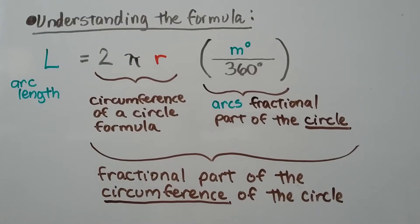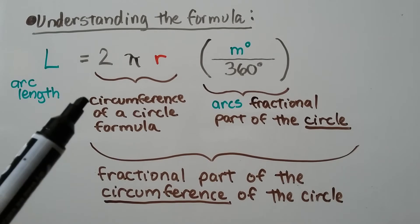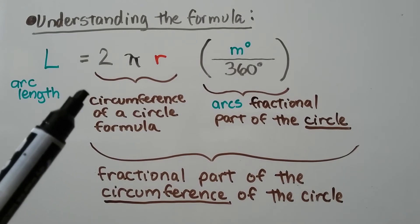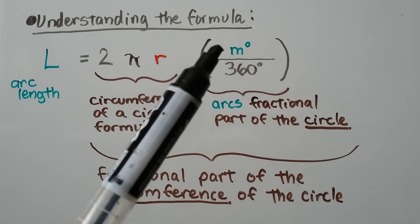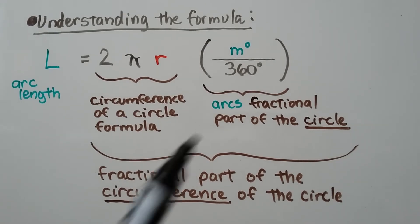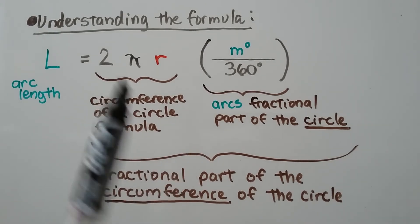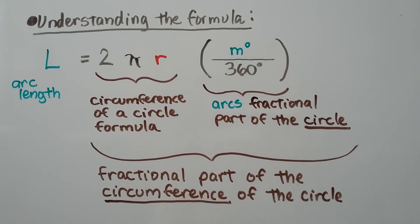To completely understand the formula: we have L, that's our arc length; we have 2πr, and that's the formula for the circumference of a circle. And then we have M degrees over 360 degrees — that's the arc's fractional part of the circle. When we put these together, we get the fractional part of the circumference of the circle.